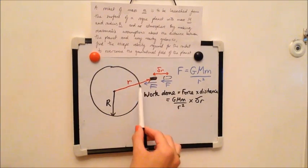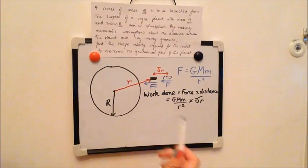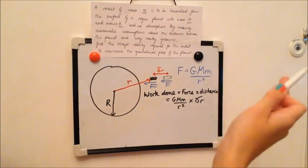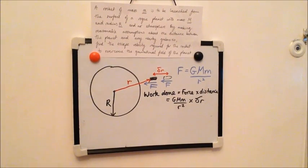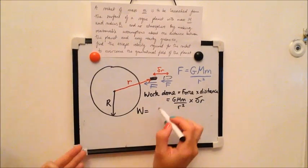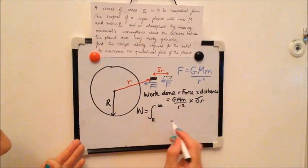...all the way to outside the gravitational field of the planet, we will need to sum all these little works done from big R to infinity, which is where the gravitational field of the planet will end. Now if this isn't an intuitive step and you weren't to get it in the interview, the interviewers may again help you so that you might be able to proceed further with the question, so don't panic. So therefore the total work done, which I'm just going to write as W, will be equal to the integral between big R, so the radius of the planet, and infinity of this.